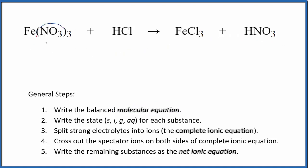I can see that I have three nitrates here and only one over here. So I'm going to put a 3 in front of the HNO3. That balances the nitrogens. Now I need to put a 3 here to balance the hydrogens. So three hydrogens, three hydrogens, and now I have three chlorines. I have an iron here and here. This is the balanced molecular equation.